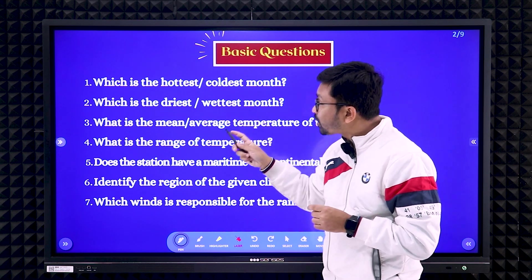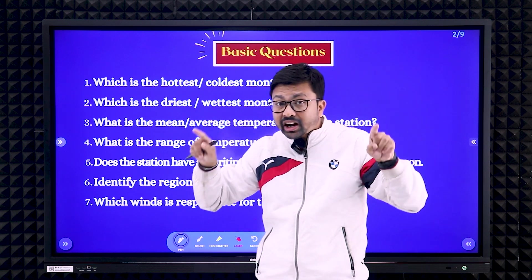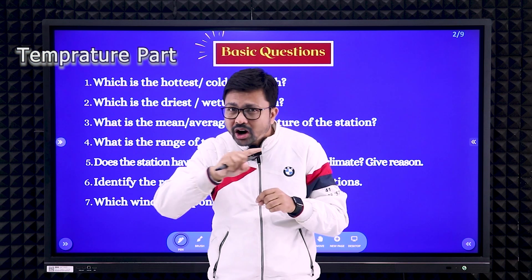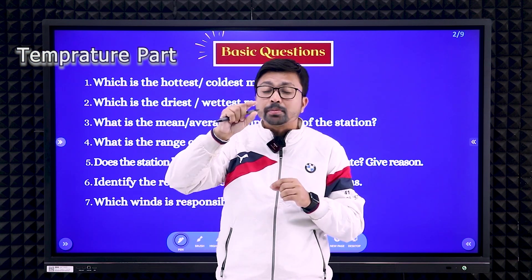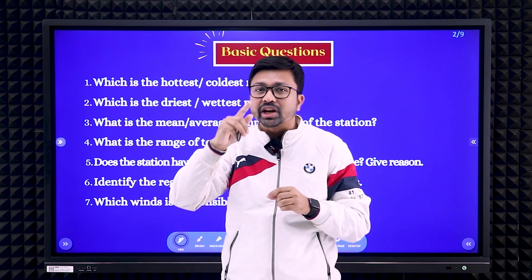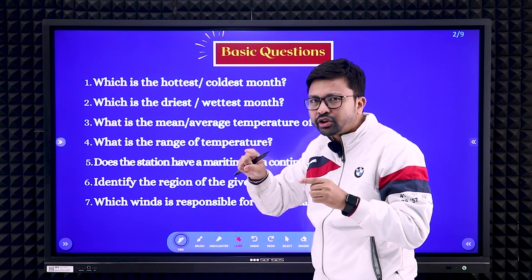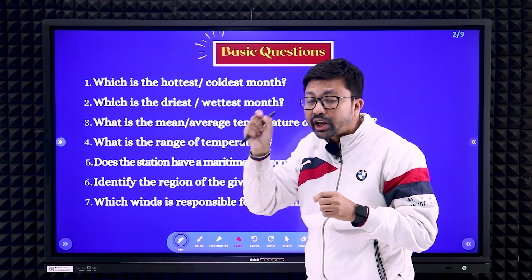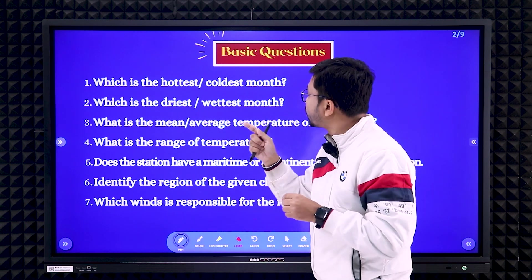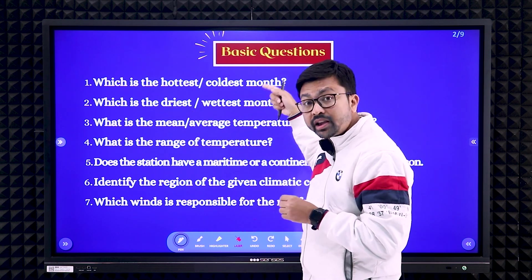First question: what is the hottest or coldest month? In the climatic data, you need to check only the temperature part. Whichever month has the maximum temperature, that is the hottest month. Similarly, for the coldest month, you check which month has the minimum temperature recorded throughout the year — out of 12 months, whichever month has the minimum temperature is the coldest month.